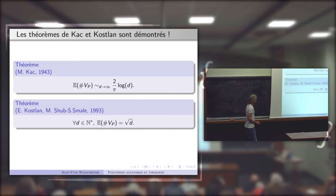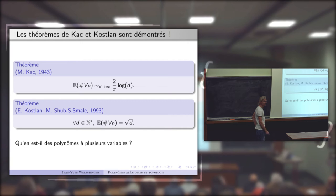C'est là que se pose la question de savoir ce qui reste de ces résultats quand on augmente le nombre de variables du polynôme. C'est un peu là-dessus qu'on travaille avec Damien.